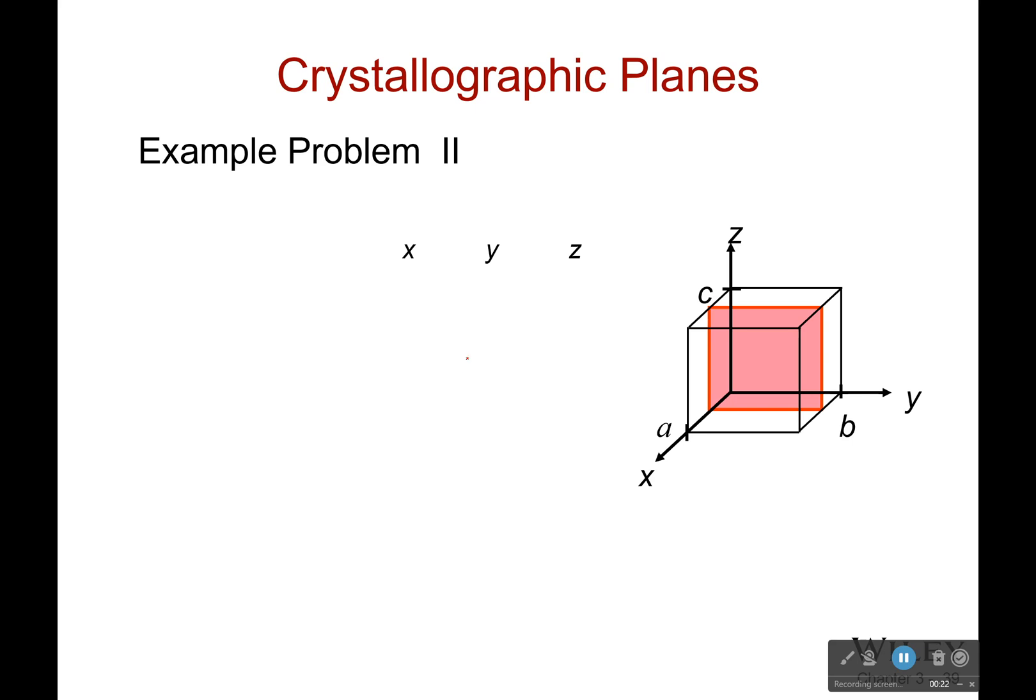So first off, do I need to really relocate the origin? Well I don't because my plane does not go through that point right there, which is where I have my origin set currently. So I'm good. Second step, where does it intercept? Well the only axis that it actually intercepts is the x-axis and does that at a point a over 2. So for b and for c it's infinity because straight lines intersect at infinity.